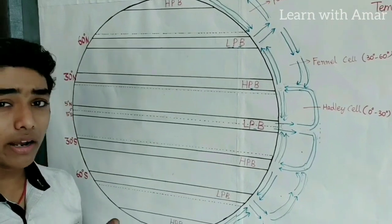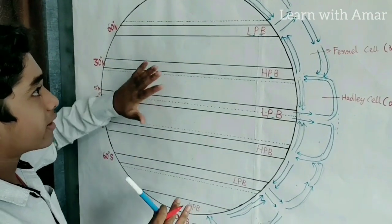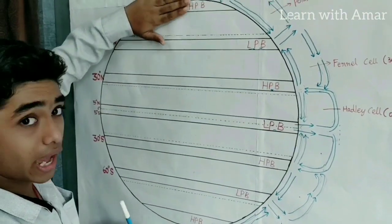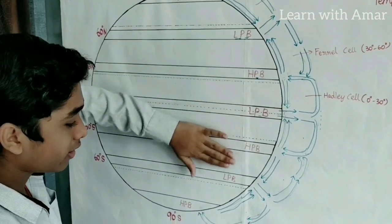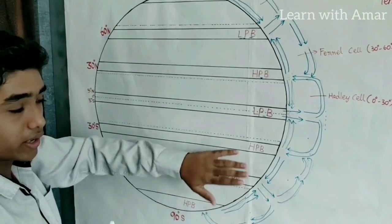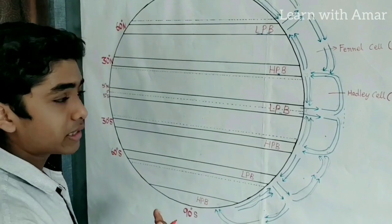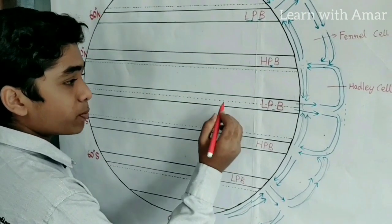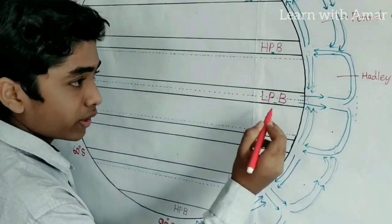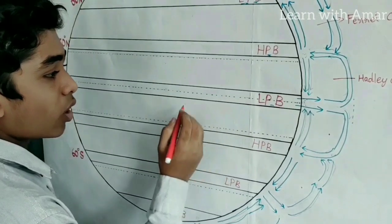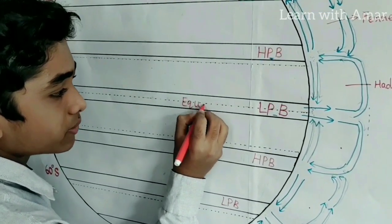Now let us look at the belts again. We find a pattern: high pressure, low pressure, high, low, high, low, high, low, high. Now let us name these belts for our convenience. This belt is situated on the equator, so we call this the equatorial low pressure belt.